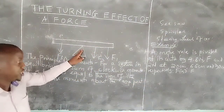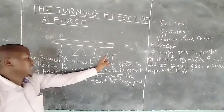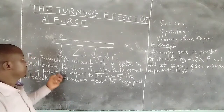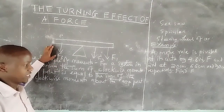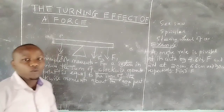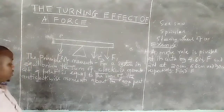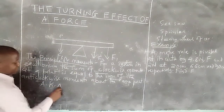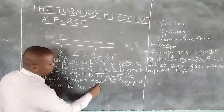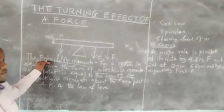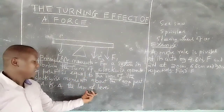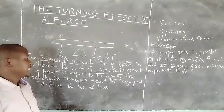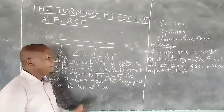Taking moments about the point of support, we consider the clockwise moments and the anticlockwise moments. The sum of clockwise moments is equal to the anticlockwise moments. This is also called the principle of moments, which is also known as the law of moments. For a system in equilibrium, the sum of clockwise moments at a point is equal to the sum of the anticlockwise moments about the same point.